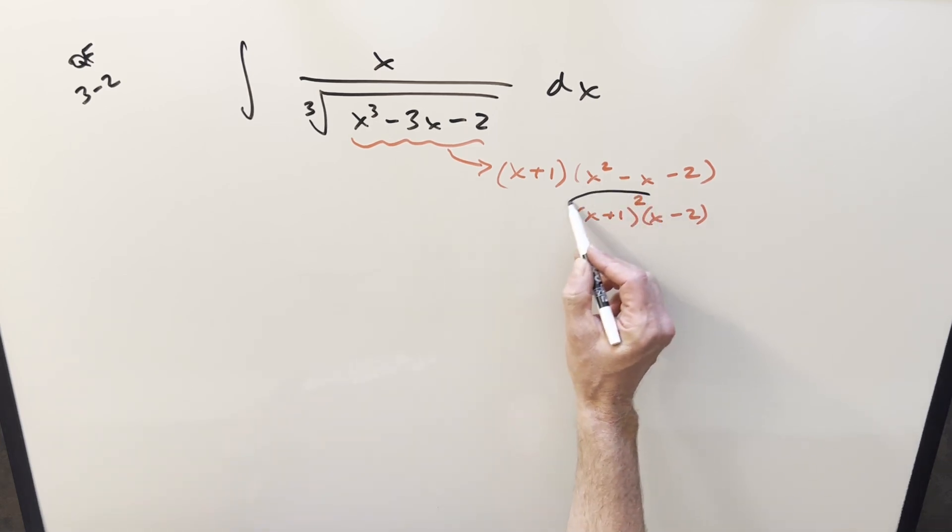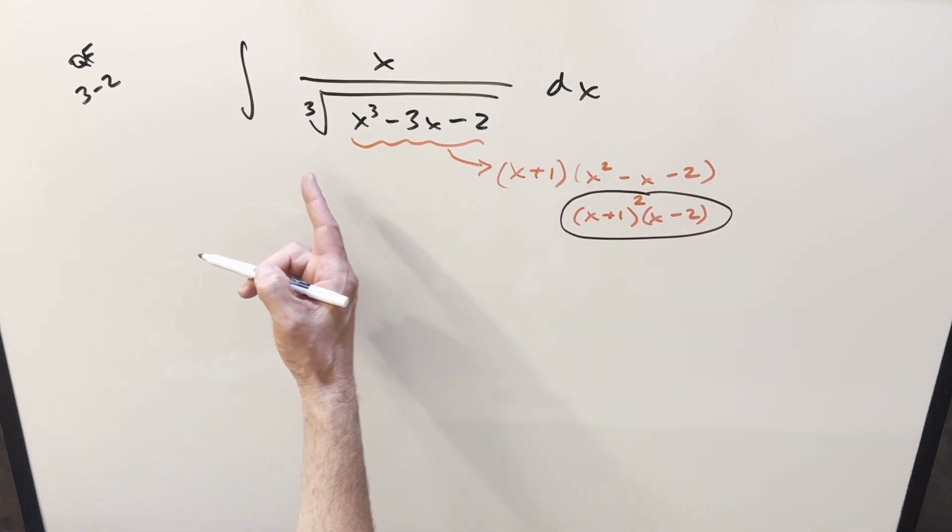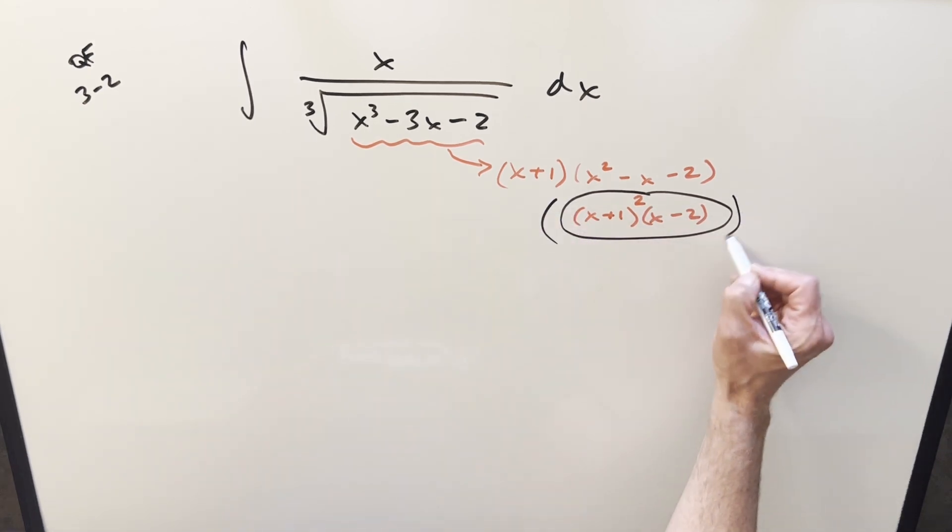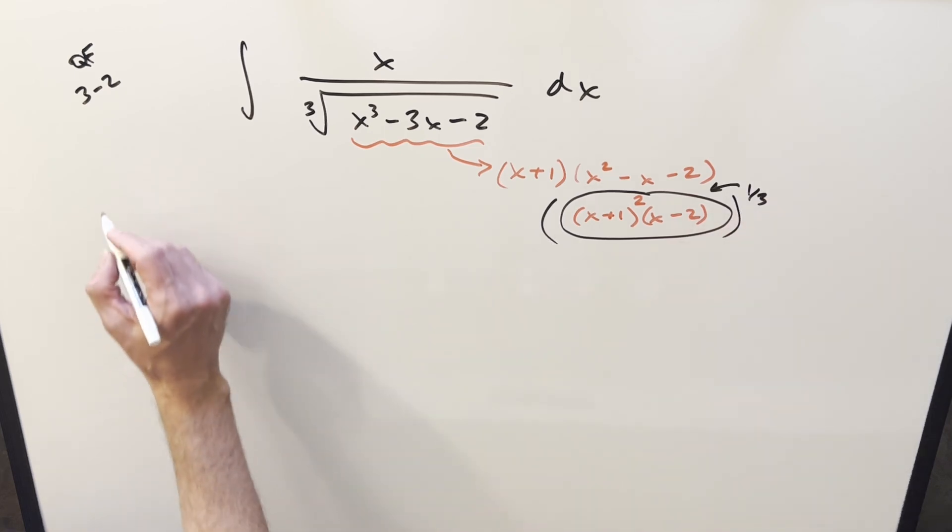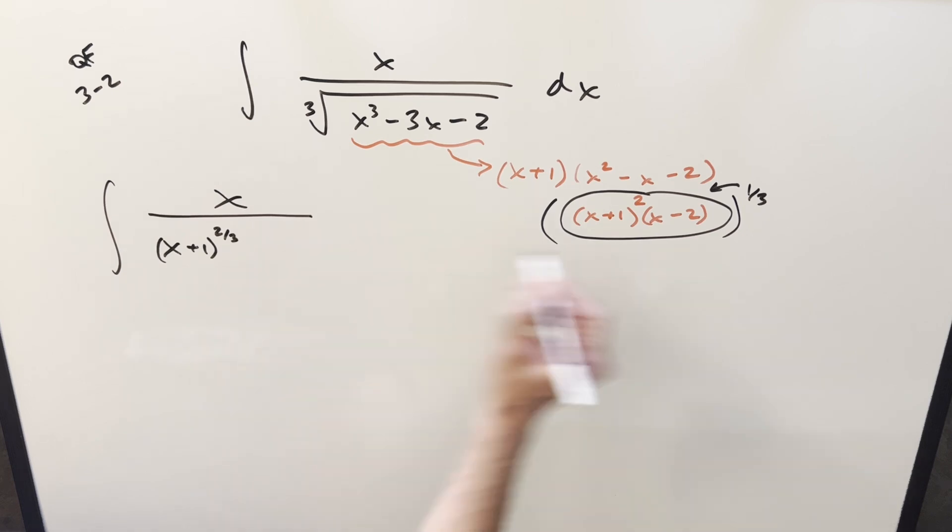So with that, let's just take this and throw it back into the integral, actually inside the radical. And then, I mean, if we think about it like 1 third power, and then we can distribute in the power. So how it's going to look is we'll have our x up here. And now distributing in the power, the first part here becomes x plus 1 to the 2 thirds. And this is going to be x minus 2 to the 1 third.